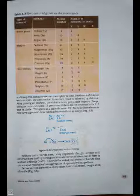Page number 47. Table 3.3 Electronic configuration of some elements. Four columns are given: type of element, element, atomic number, and number of electrons in shells. The types of elements given are noble gases, metals, and non-metals. And it requires one more electron to complete its octet.